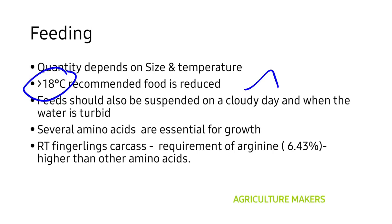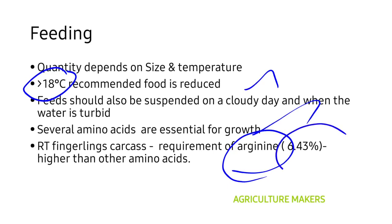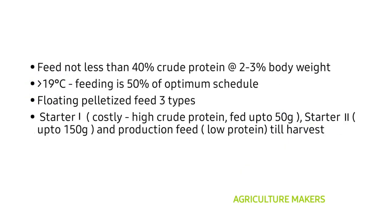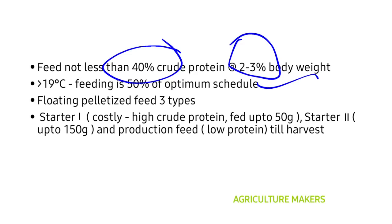Several amino acids are essential for trout growth. In particular, arginine has been reported to be the most essential — the fingerling carcass of rainbow trout has a higher amount of arginine at 6.43% compared to other amino acids. Feed should be rich in protein — not less than 40% crude protein — and is supplied at a rate of 2 to 3 percent of the body weight. Feed is classified into three types of floating pelletized feed: Starter 1, Starter 2, and Production feed. Starter 1 is costly due to its high crude protein content and is fed up to 50 grams body weight.